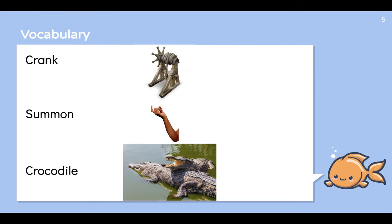Before we start, I just want to go over a few vocabulary words. The first one is 'crank' — a crank is a wheel that you turn. We're going to find out that the dragon is attached to a rope that brings it to the other side of the island by using a crank. The next word is 'summon' — when you summon someone to do something, you're telling them they have to be somewhere, not necessarily a place they want to be. The last word is 'crocodile' — we're going to see crocodiles in our story today, and here's a real life picture of what they look like.